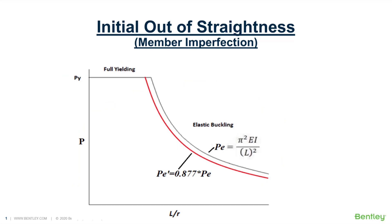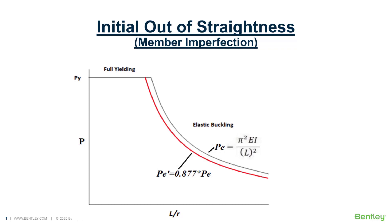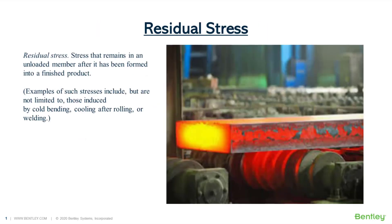After limiting maximum allowable displacement, the corresponding allowable buckling load can be projected and calibrated, which is less than the Euler load by some factor. AISC, after rigorous testing by several structural engineers over decades, calibrated the allowable buckling load for a column with initial out-of-straightness of about L/1470, and statistically came up with a calibrated factor of 0.877. So in the AISC column curve equation, the buckling curve appears as 0.877 times the actual Euler buckling load.